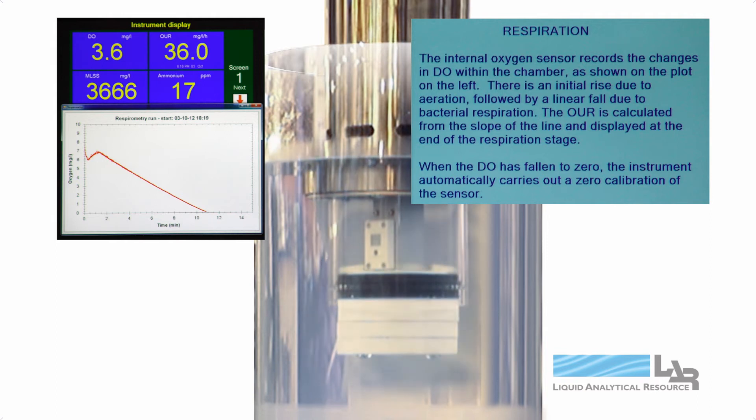An internal oxygen sensor records the changes in dissolved oxygen in the chamber. The plot shows the initial rise in oxygen, followed by a linear drop due to the respiration of bacteria. The oxygen uptake rate is calculated from the slope and displayed at the end of the respiration stage.